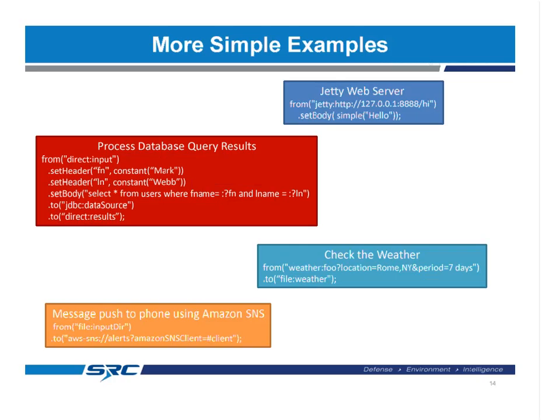Another example: setting up a web server using the Jetty component — Jetty is an embeddable Java-based application server. In just a couple lines of Java code using Camel, you can set up a Jetty web server that listens on a specific URL and returns a response. Obviously you could extend this to do a lot more than just printing 'hello.' There's also a weather component — in a couple lines of code you can get the weather, and you could put it on a timer to send yourself an email every day at 8 o'clock in the morning with the daily forecast. It's something very simple to do with Camel.